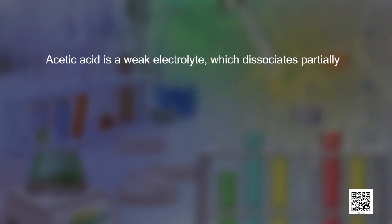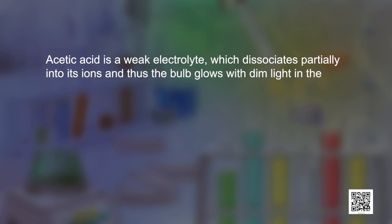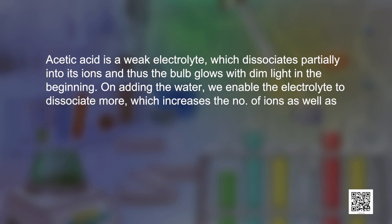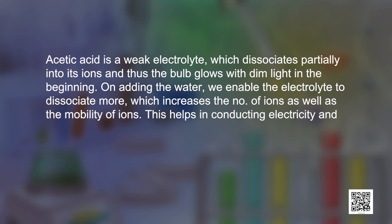Sodium chloride is a strong electrolyte and conducts electricity readily, because strong electrolytes dissociate completely into their ions. Acetic acid is a weak electrolyte which dissociates partially into its ions, and thus the bulb glows with dim light in the beginning. On adding water, we enable the electrolyte to dissociate more, which increases the number of ions as well as the mobility of ions, helping in conducting electricity so the bulb glows gradually.